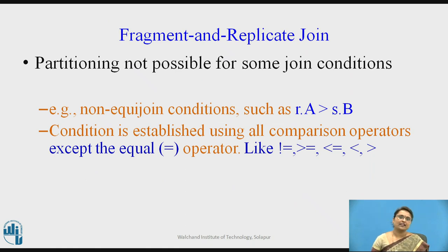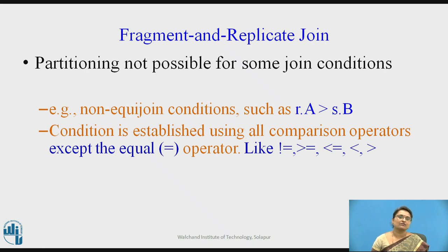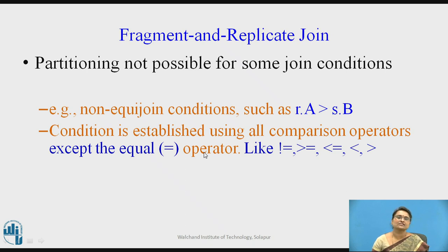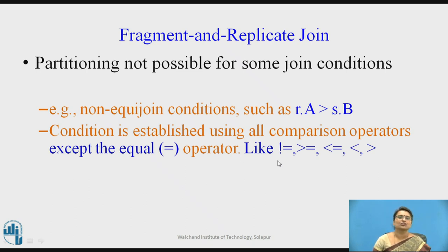Fragment and Replicate Join is basically used where non-equijoin conditions are there — where partitioning is not possible for equality conditions. For example, relation R with attribute A greater than relation S attribute B. The conditions use comparison operators other than equals, such as not equal to, greater than or equal to, less than or equal to, less than, or greater than.